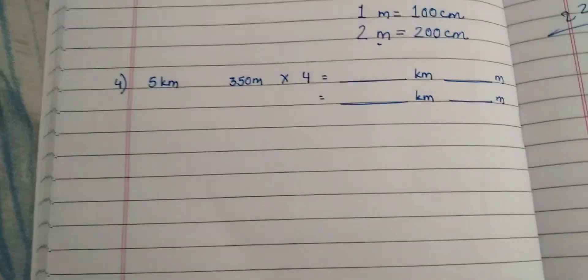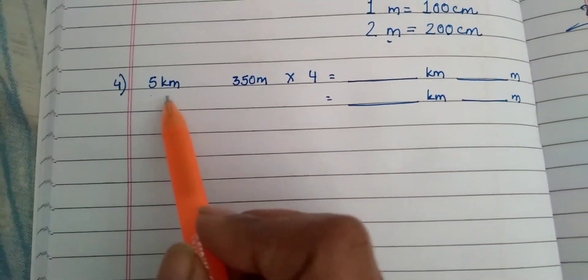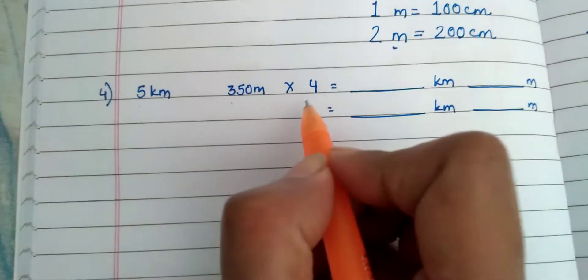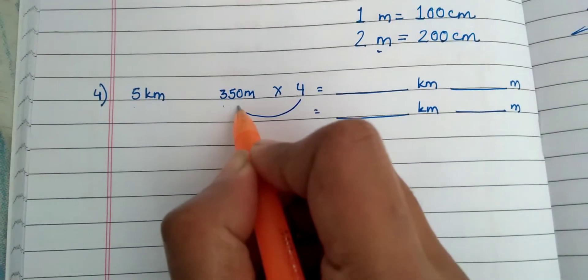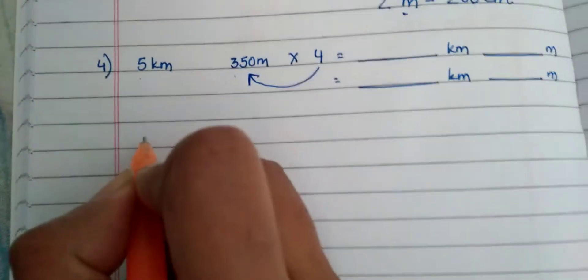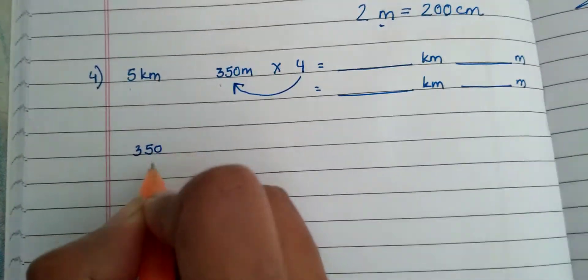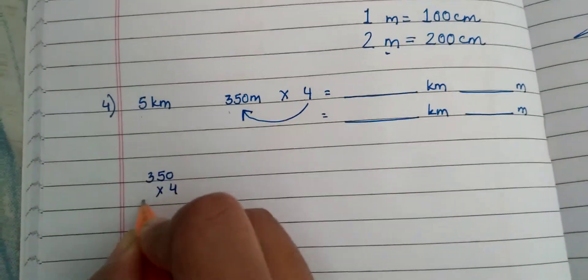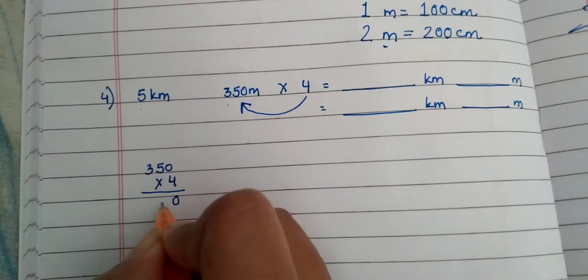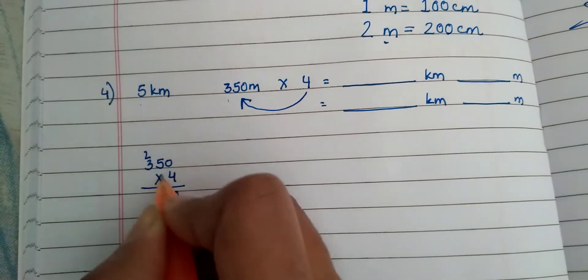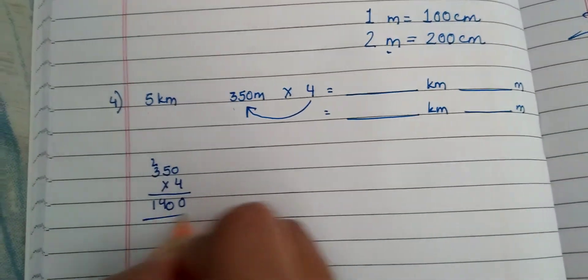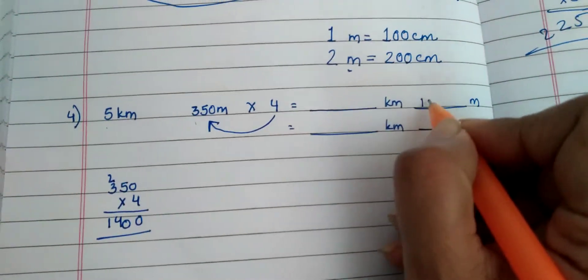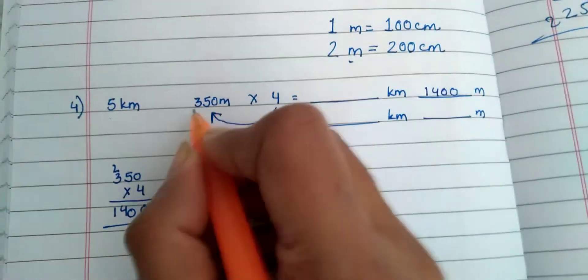Okay, see this question now: 5 kilometer 350 meter multiplied by 4. First we'll multiply 4 with 350. You can multiply here: 350 multiplied by 4 will give you 1400. 4 multiplied by 350 will give you 1400.